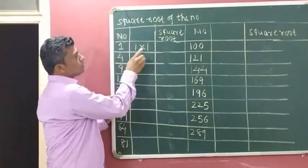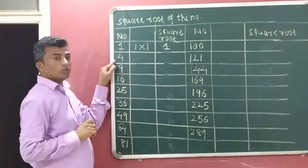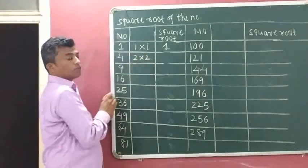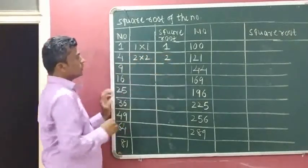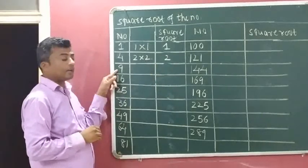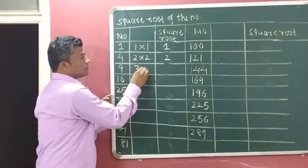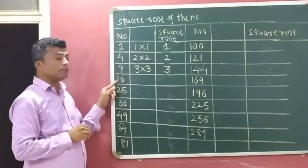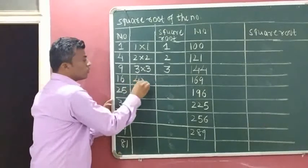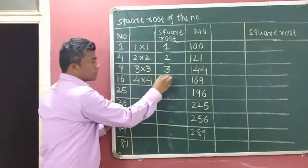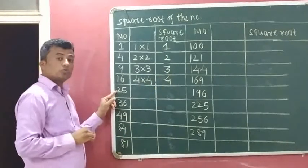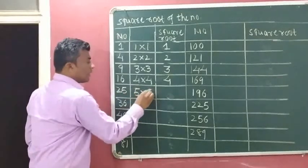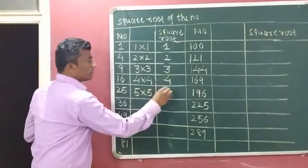Square root of 4: 2 times 2 is 4, so square root of 4 is 2. Square root of 9: 3 times 3 is 9, so square root of 9 is 3. Square root of 16: 4 times 4 is 16, so square root of 16 is 4. Square root of 25: 5 times 5 is 25, so square root of 25 is 5. Square root of 36: 6 times 6 is 36, so square root of 36 is 6.